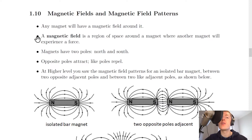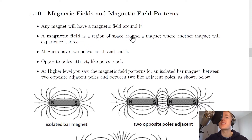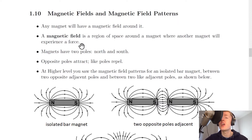The first thing we need to be aware of is that any magnet will have a magnetic field around it. The magnetic field itself is defined as a region of space around a magnet where another magnet will experience a force. This is very similar to the definition for electric field, which is the region of space around a charge where another charge will experience a force. So all we're doing is swapping out the word charge for the word magnet.